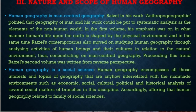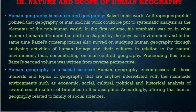Third, human geography is a social science. Human geography encompasses all interests and topics of geography that are interrelated with the man-made environments, such as economic, social, cultural, political, and historical analysis of several social matters across branches of this discipline. Accordingly, human geography is related to the family of social sciences.